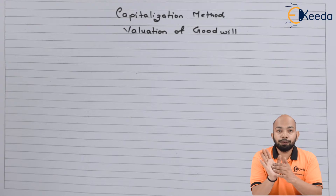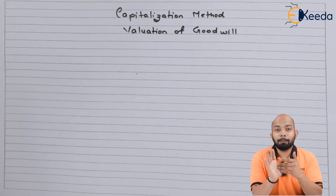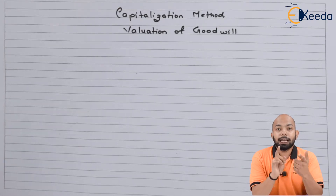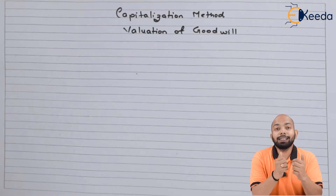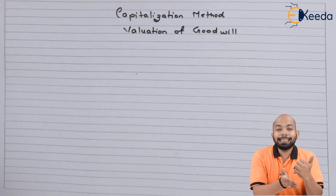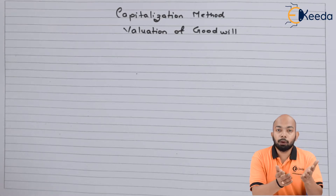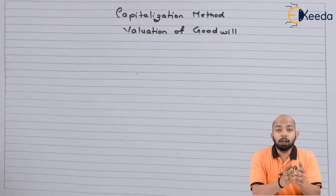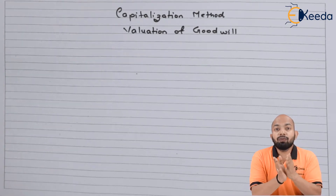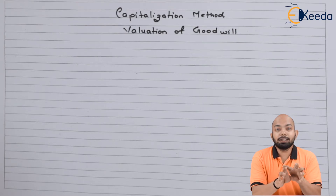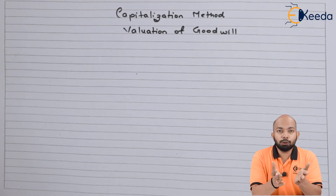Part B refers to the average profit of the business. This average profit can be calculated either by the super profit method, simple average profit, or weighted average profit. In the simple method, you take the sum of all profits divided by the number of years. Where there is an increasing or decreasing trend of profits, you use the weighted average method, assigning higher weights to more recent profits. Either method can be used for calculating average profit. If average profit is already provided in the question, no further calculation is needed.